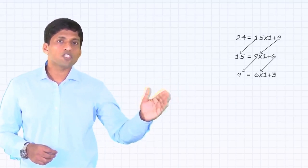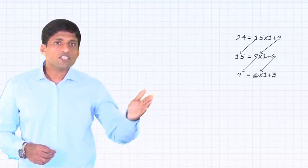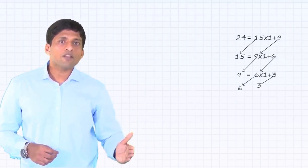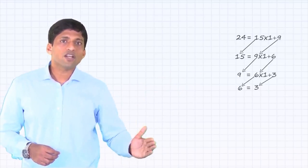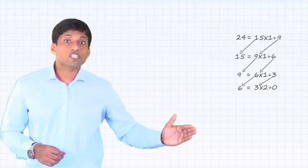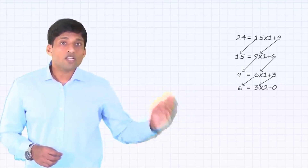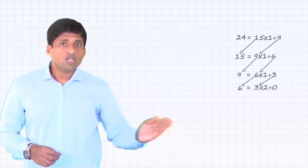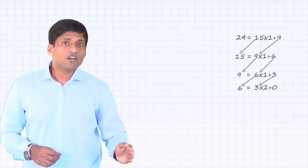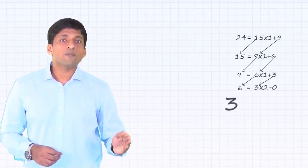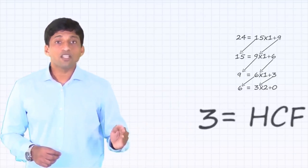So you'll continue once more. 6 will become the dividend and 3 will become the divisor. You can write it as 6 = 3 × 2 + 0. Once we get remainder 0, the divisor here — that is 3 — will be the HCF.